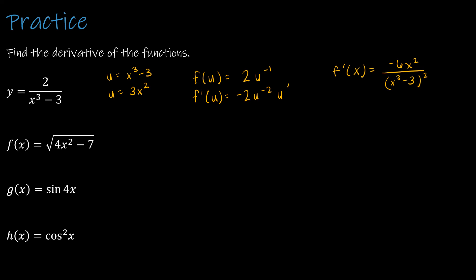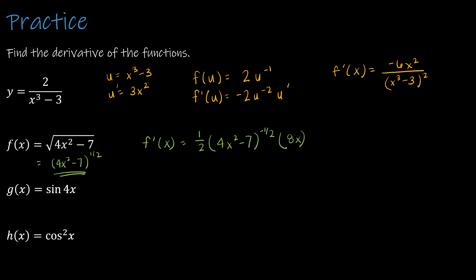For the second question, using the chain rule without rewriting as u and u': y = (4x²-7)^(1/2), so f'(x) = (1/2)(4x²-7)^(-1/2) · 8x. Simplifying: (1/2)·8x = 4x in the numerator, and (4x²-7)^(1/2) in the denominator. So f'(x) = 4x/√(4x²-7).